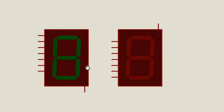A 7-segment display is the earliest type of electronic display that uses 7 bars — basically 8 bars if we're going to use a decimal point — in a way that can be used to display numbers from 0 up to 9.